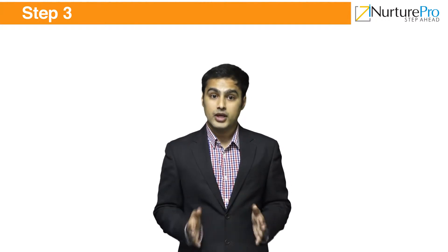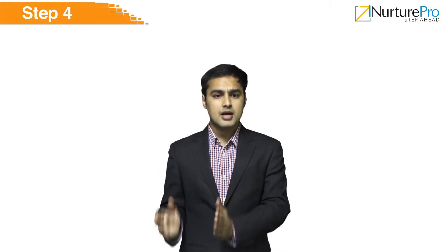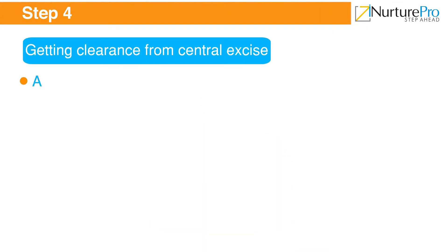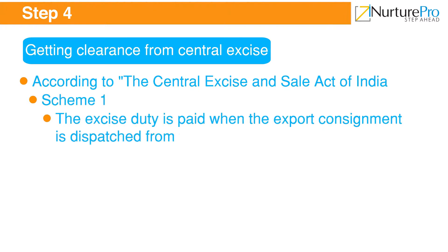Once the exporter receives the final export order, the export process is commenced. The exporter analyzes the order with regard to the terms and conditions, validating the complete name and address of the buyer, description of the products, terms and modes of payment, need for inspection and insurance, and delivery time. The exporter then confirms the order.